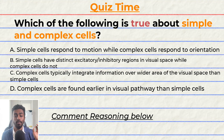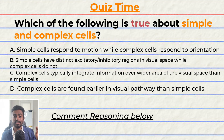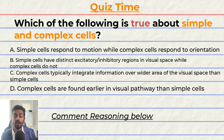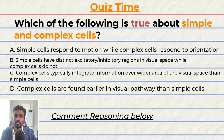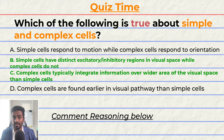Quiz time — have you been paying attention? Which of the following is true about simple and complex cells? A: Simple cells respond to motion, while complex cells respond to only orientation. B: Simple cells have distinct excitatory and inhibitory regions in the visual space, while complex cells do not. C: Complex cells typically integrate information over a wider area of the visual space than simple cells. Or D: Complex cells are found earlier in the visual pathway than simple cells. The correct options are B and C. Comment your reasoning below and let's have a discussion.